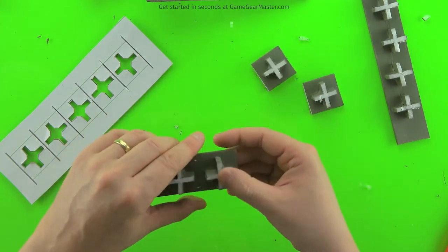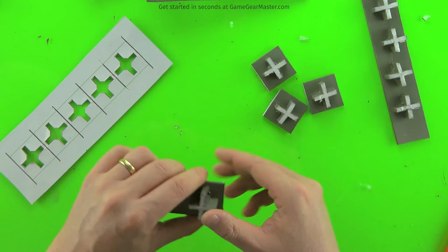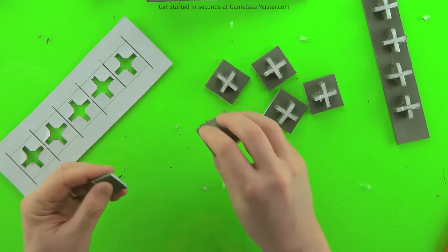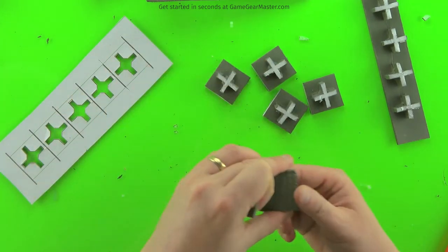After this is done, you'll just touch up those edges that are exposed there with some more gray strong coat. There you go. You can see it's pretty fast to make these.